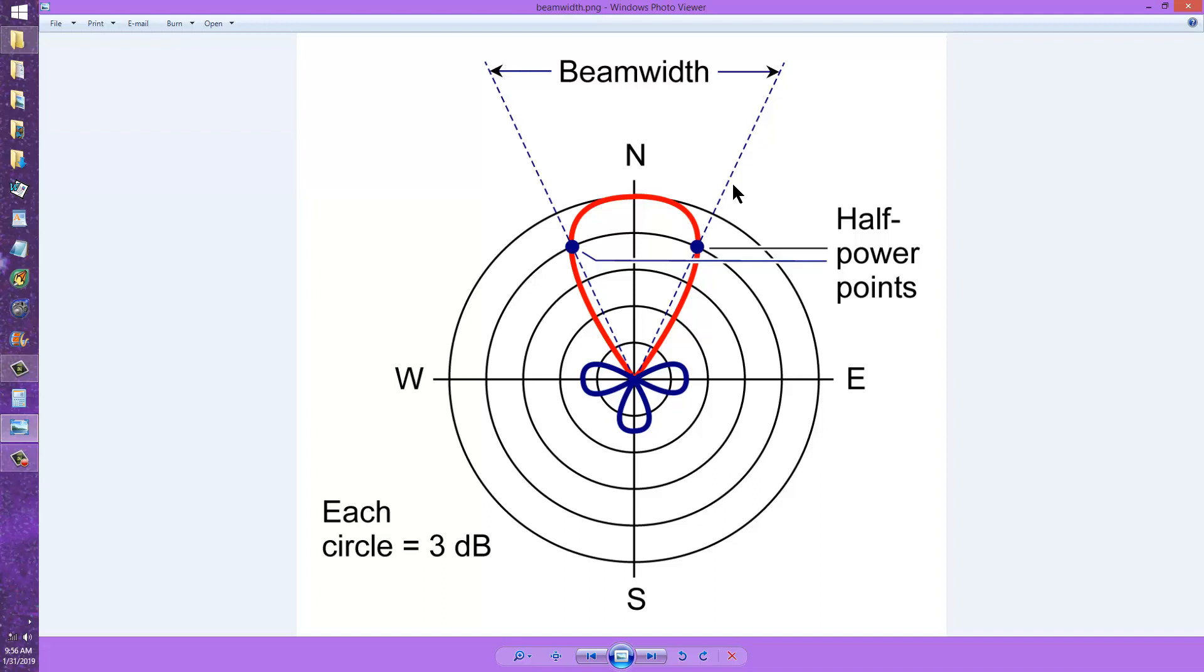But usually, the half power points refer to the horizontal plane. That's why we have north, east, south, and west here. We are looking at this situation, the antenna being at the center of this diagram, from straight overhead. We're looking straight down on the antenna.